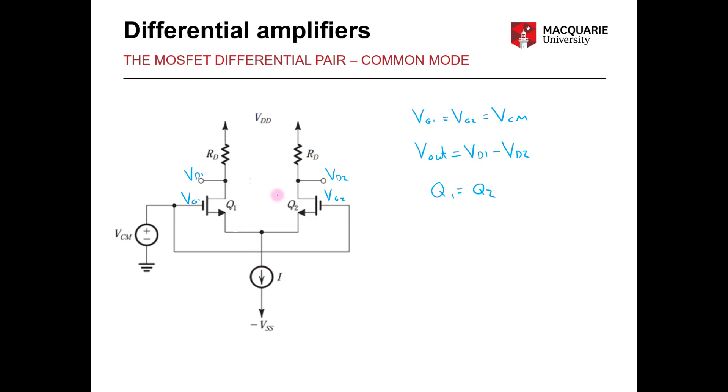So therefore it will be split evenly between ID1 and ID2. So we can say that ID1 is equal to ID2 which is equal to I divided by 2.